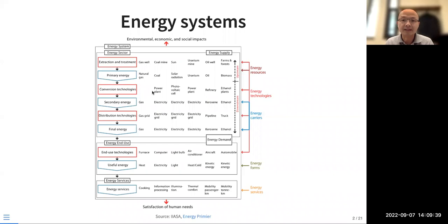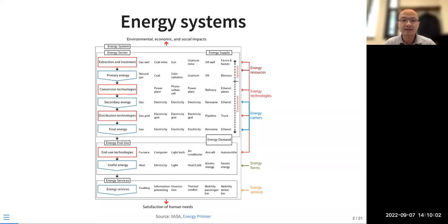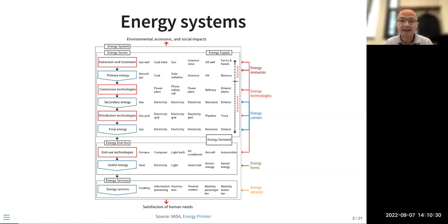Power plants, PV, refineries, and ethanol plants convert energy to secondary energy such as gas, electricity, ethanol, and kerosene. Through massive distribution technologies including our electric grid, pipelines, and trucks, energy reaches the final form ready for use. We talked about electrification — that's also why electricity is very important in this framework. Then it goes to the end user, where we have different end-use technologies like air conditioning.